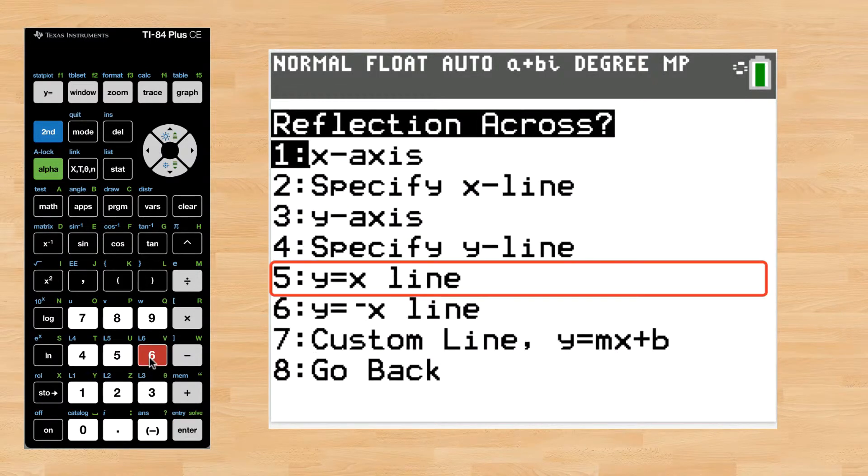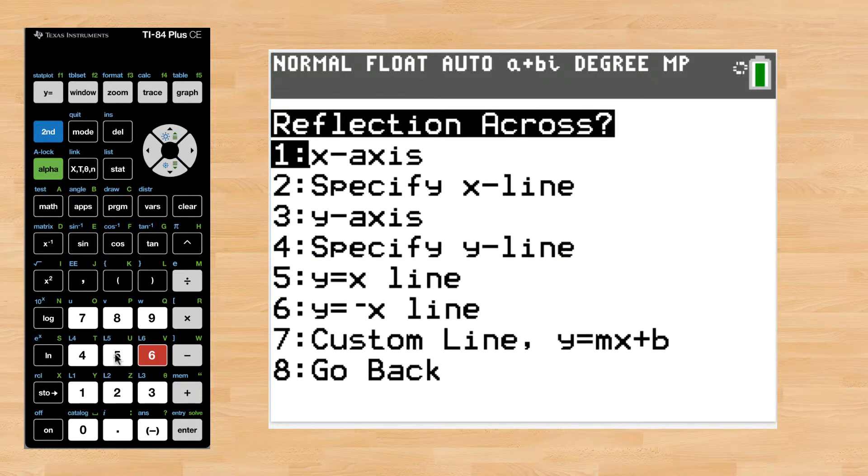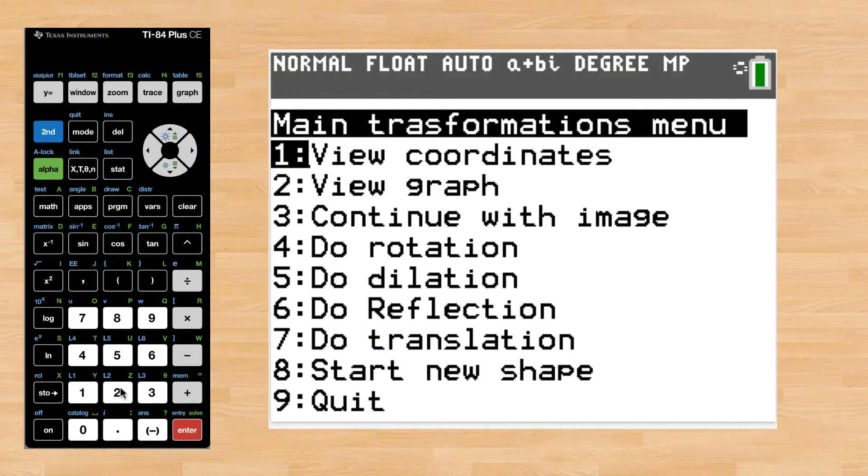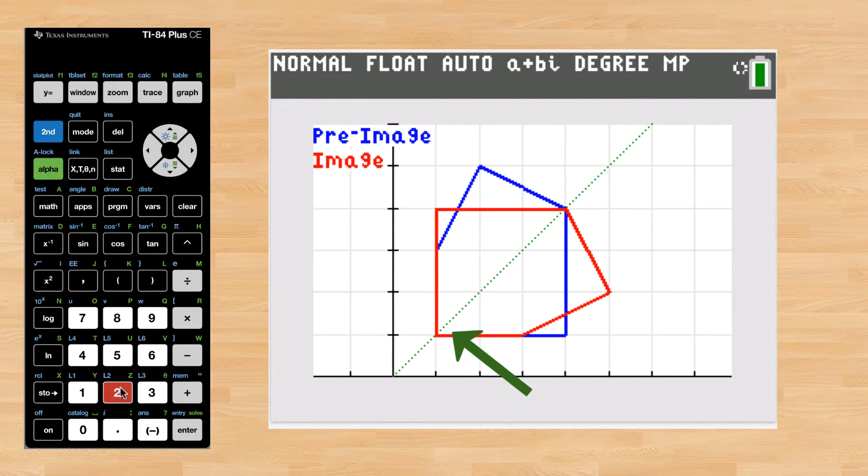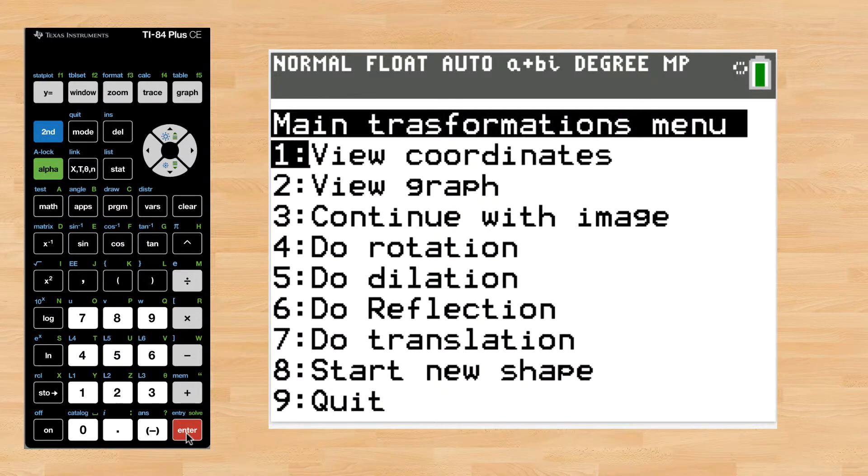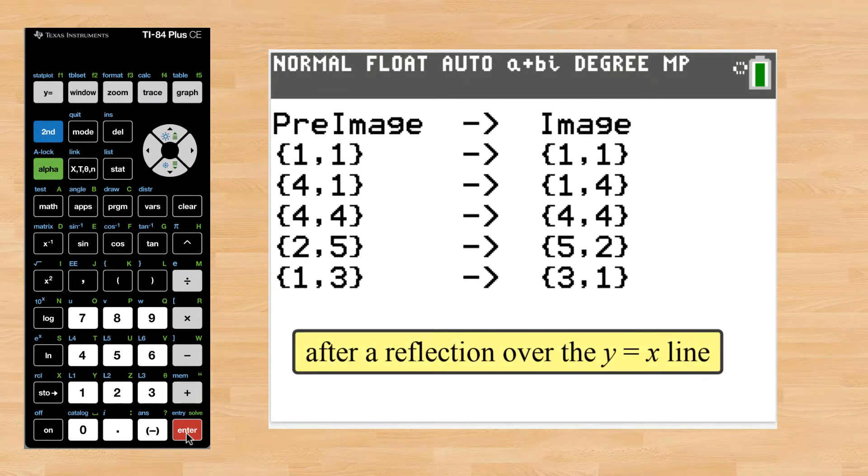You can also reflect across the diagonal line, and when you do, a light dotted green line will show you where the line of reflection is. Best of all, you can always view the coordinates of the preimage and the resulting image.